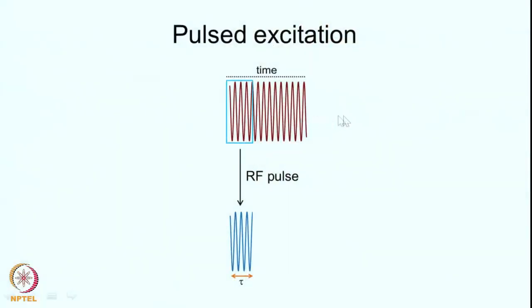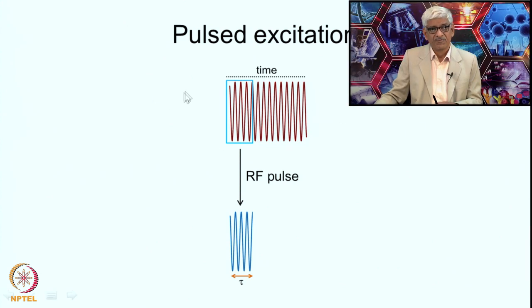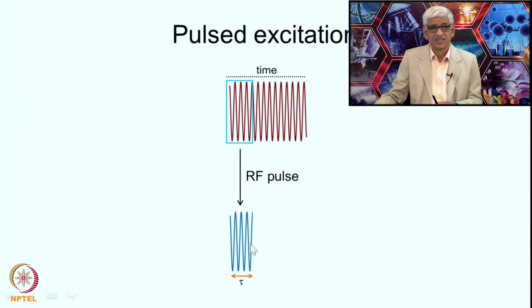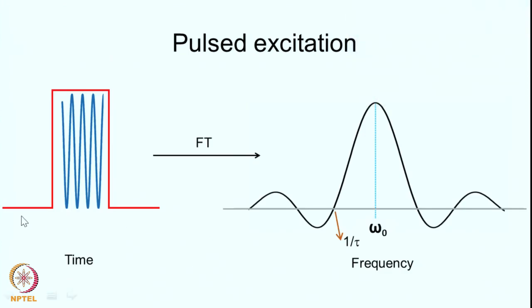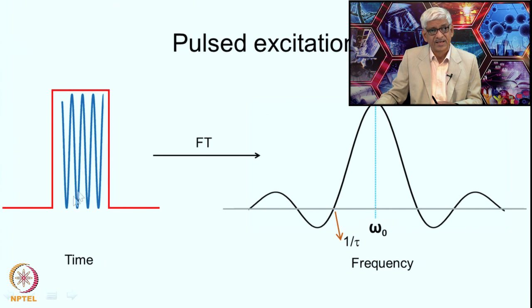You have the RF frequency as a sine or cosine wave along the time axis. What you do now is apply this RF only for a short period of time — you start here and cut it off. You apply the RF only for a short period tau, and this is called a pulse. Your time-domain profile of the RF looks like: zero RF, then applied for a certain time, then off again.